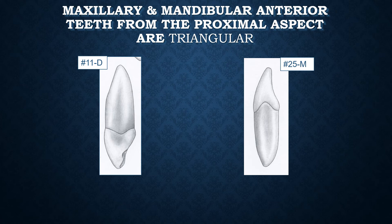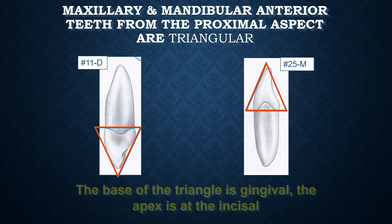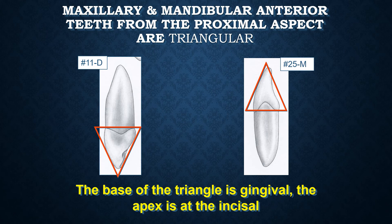Maxillary and mandibular anterior teeth from the proximal aspect — that is from the mesial or distal aspect — resemble a triangle, where the apex is towards the incisal edge or incisal ridge. The base of the triangle is gingival while the apex is towards the incisal edge.